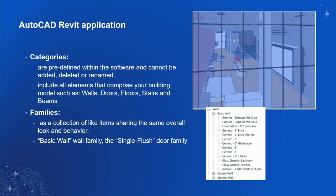Here's the Revit application. It is predefined with software categories that cannot be added, deleted, or renamed. In every Revit model we have architectural, electrical, and all these families. That's how Revit is constructed following the BIM standard. So we have walls, doors, floors, stairs, beams, and other things, and within these families there are collections sharing these basic elements — multiple kinds of walls and things that we share together.